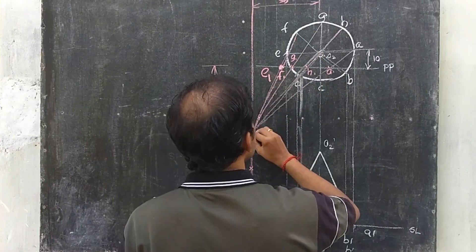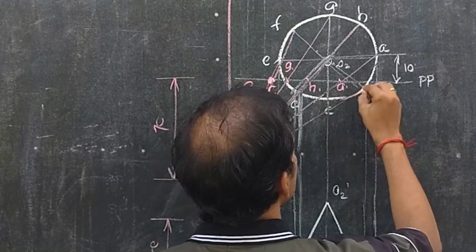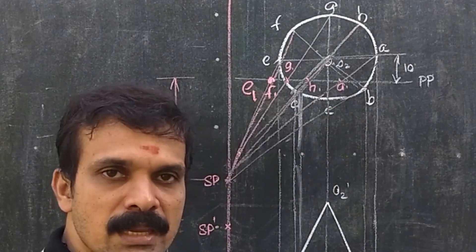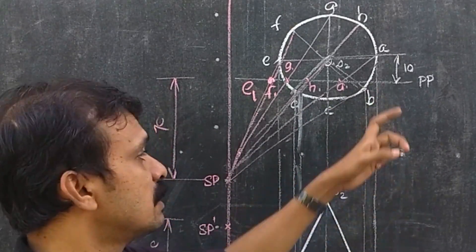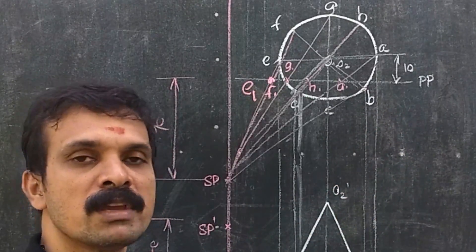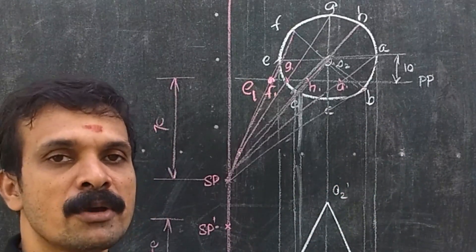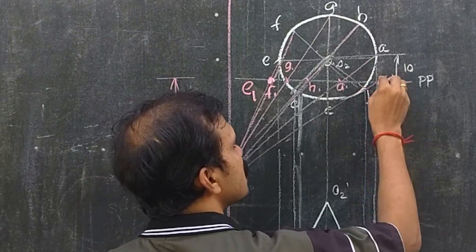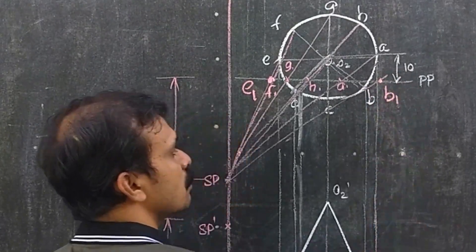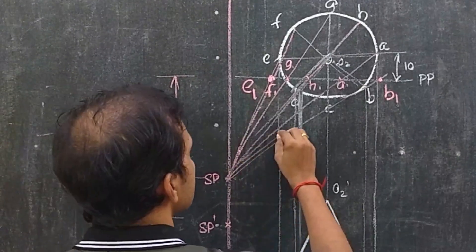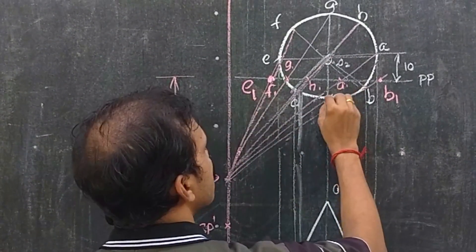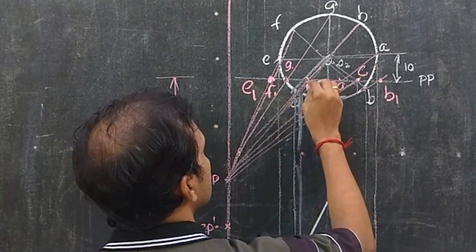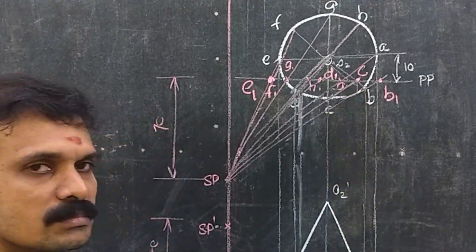Now I am connecting SP with B. When we connect SP with B, the line meets B but has not yet pierced the picture plane. So what we have to do is extend it until it meets the picture plane and name that point B1. The same approach can be adopted for C — connect SP with C, extend it, and where it meets the picture plane name it C1. Similarly for D, we get D1.